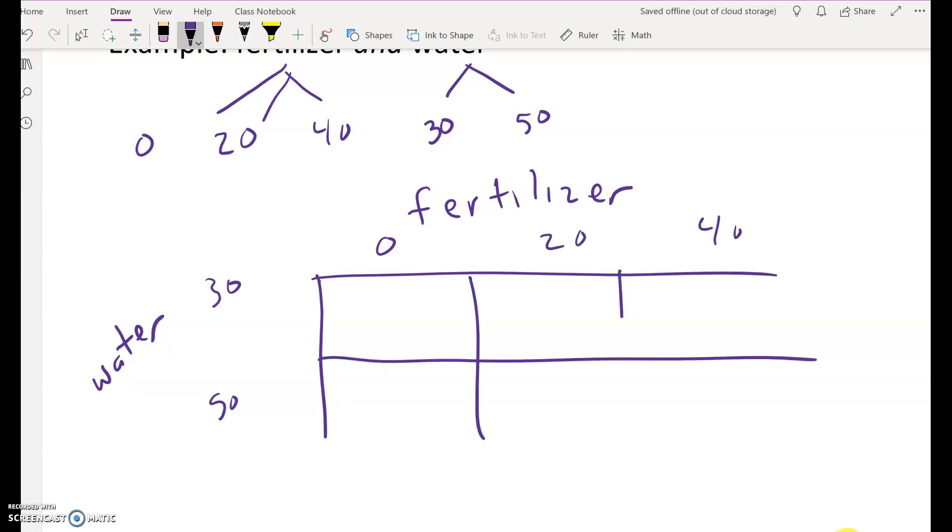And then altogether you have six combinations. So combination one, no fertilizer, and 30 gallons per acre. And that would be maybe plot number one.